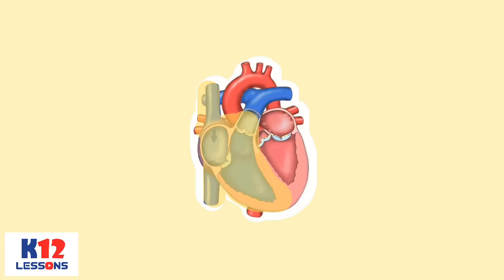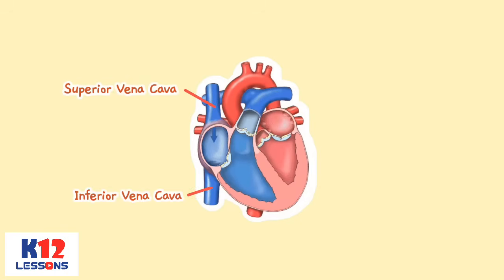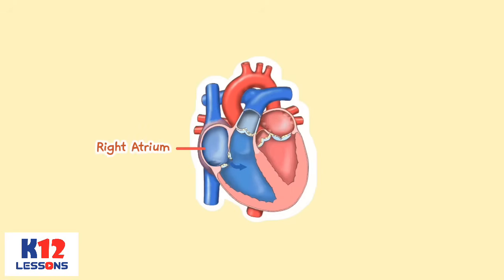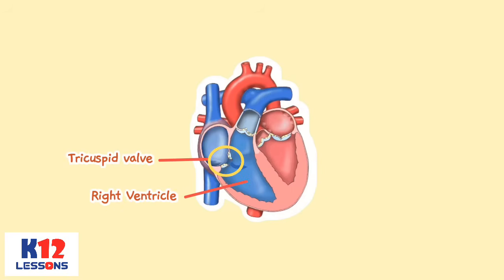Blood enters the right side of the heart through two large veins — the inferior and superior vena cava — emptying oxygen-poor blood from the body into the right atrium. As the atrium contracts, blood flows from the right atrium into the right ventricle through the open tricuspid valve. When the ventricle is full, the tricuspid valve shuts, preventing blood from flowing backward into the atria while the ventricle contracts.